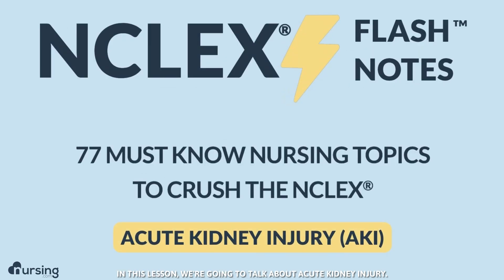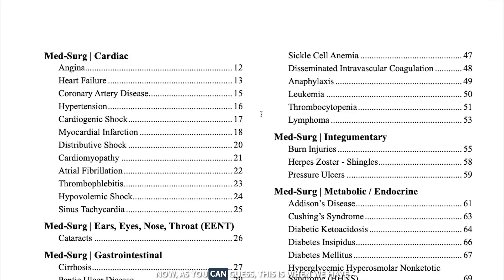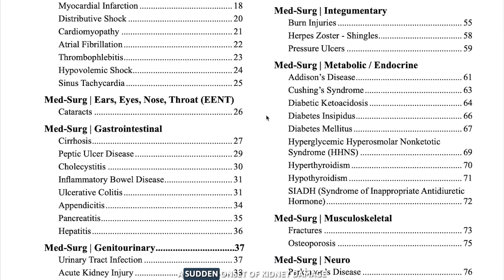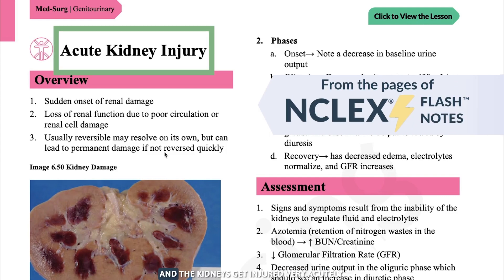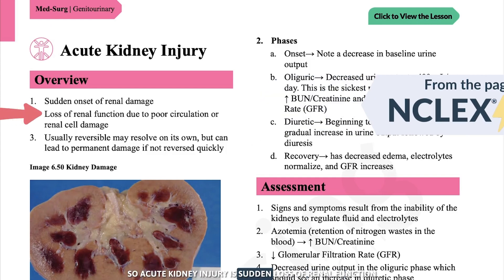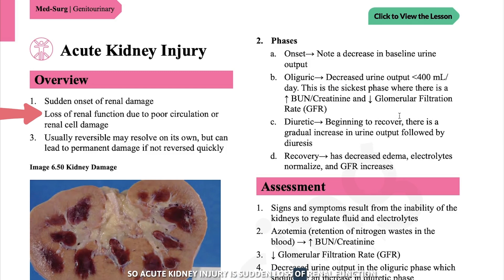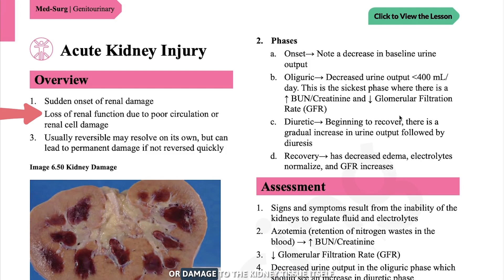In this lesson we're going to talk about acute kidney injury. This is when we have a sudden onset of kidney damage and the kidneys get injured very acutely. Acute kidney injury is a sudden loss of renal function and it's generally caused by a perfusion issue or damage to the kidney tissue itself.